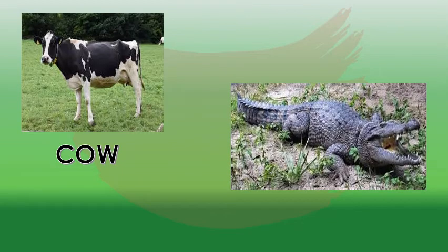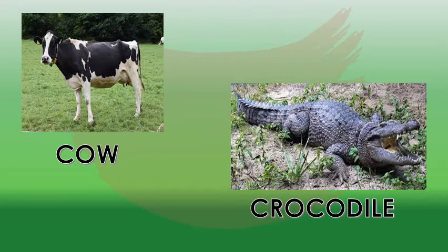What is this? This is cow. What is this? This is cow. What is this? This is crocodile. What is this? This is crocodile.